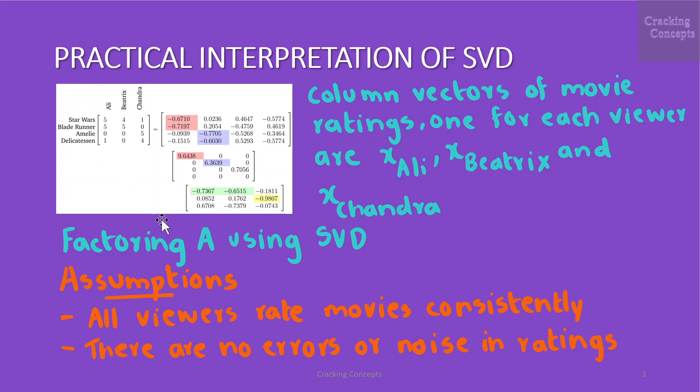Factoring A using SVD offers a way to capture the relationships of how people rate movies and especially if there is a structure linking which people like which movies.